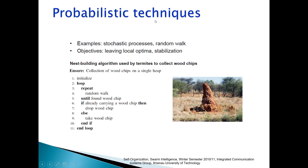Probabilistic techniques — the last basis for self-organization. Examples: stochastic processes, random walk. The objective is leaving local optima and stabilization. This is illustrated by the nest-building algorithm used by termites to collect wood chips. This is the nest of termites — a nest built by termites.